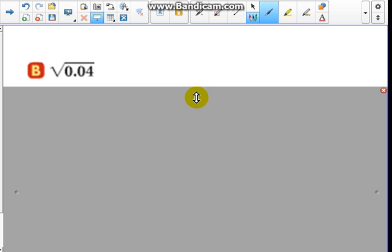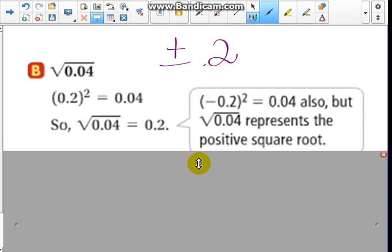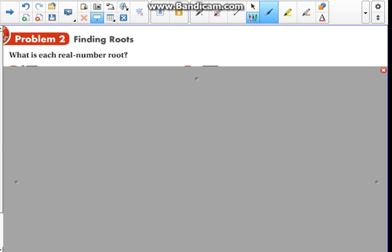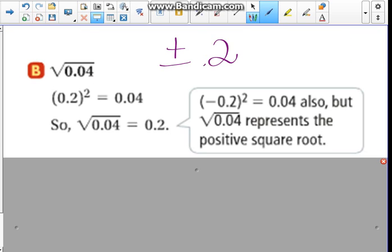Part b, this is the square root, so it's even, and our radicand is positive, so we know it's going to be a positive and negative number. What are we going to multiply together and get that? 0.2. Did they ask us a real number root? What is each real number root? We're just going to give them the positive of that, the positive square root.